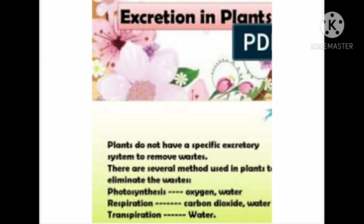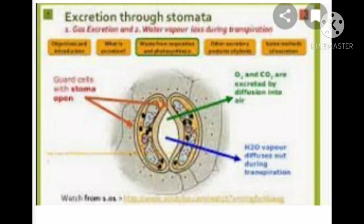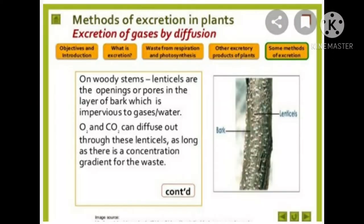During photosynthesis and respiration, carbon dioxide, oxygen, and water are produced as additional materials. When oxygen is in excess, it exits outside the cell through stomata of leaves and lenticels of the stem. Here, the diffusion process involves gas exchange taking place from higher concentration to lower concentration.